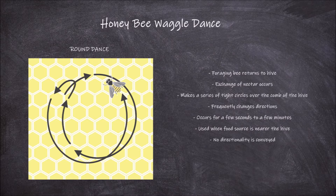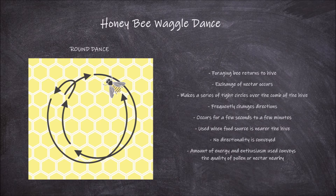No directionality is conveyed through this dance. The amount of energy and enthusiasm used by the bee in the dance conveys the quality of pollen or nectar nearby.